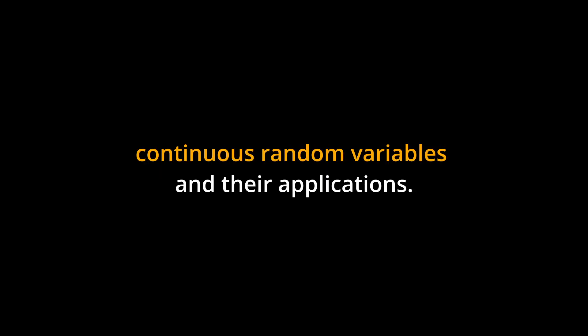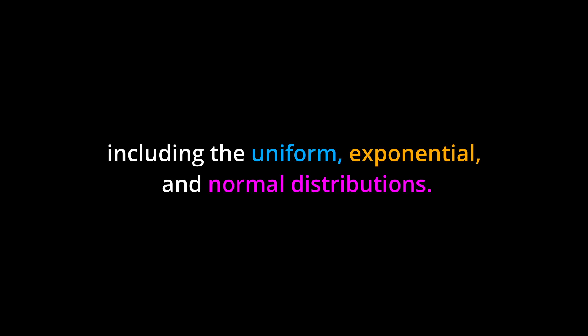Conclusion. In Chapter 5, you learned about continuous random variables and their applications. You explored the properties of continuous probability distributions, such as the probability density function and the cumulative distribution function. You also encountered various examples of continuous probability distributions, including the uniform, exponential, and normal distributions. By understanding these concepts, you can analyze real-world scenarios, make predictions, and calculate probabilities. Whether you're studying finance, statistics, or any field that deals with uncertainty, the knowledge of continuous random variables is essential for making informed decisions and understanding the world around us.